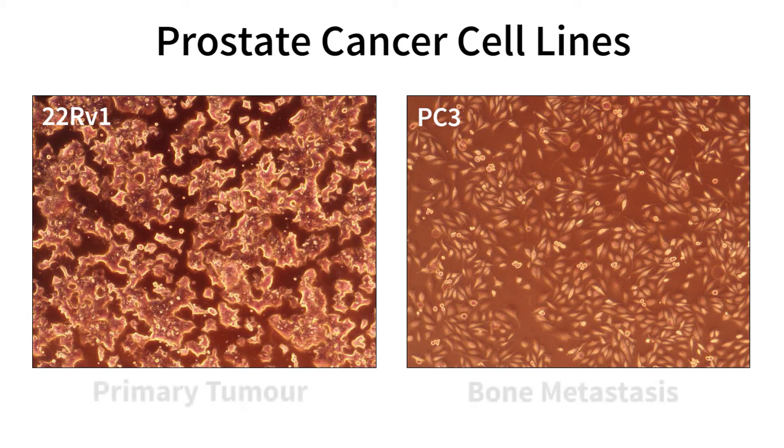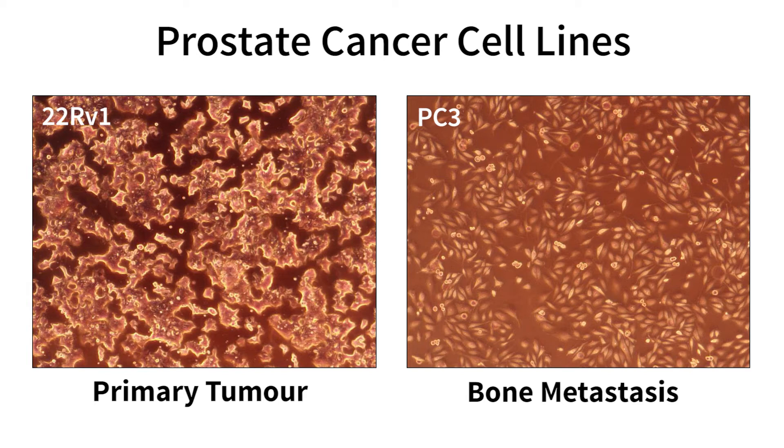However, the one on the left was derived from the original or primary tumor, while the one on the right comes from a bone metastasis and represents a more aggressive form of prostate cancer. As you can see, the morphology is different. They may also show different responses to treatment.